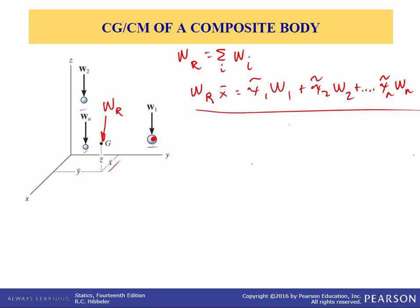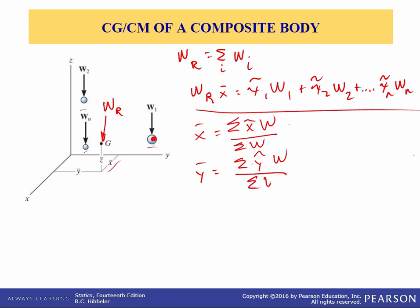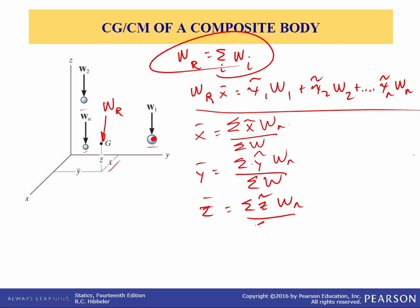When we simplify this equation, x-bar equals the summation of all the x-tildes times the weight divided by the summation of the weights, which is the resultant weight. Likewise, y-bar equals the summation of all the y-tildes times the weight divided by the summation of all the weights, and z-bar equals the sum of z-tildes times all the weights divided by the total weight. You can replace w with m in these equations to find the center of mass. The center of gravity and center of mass are the same as long as the body is in a constant gravitational field and is of constant density.